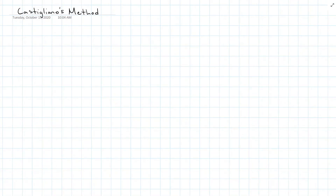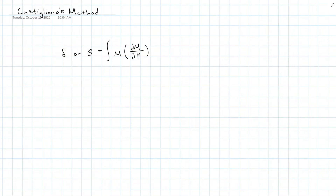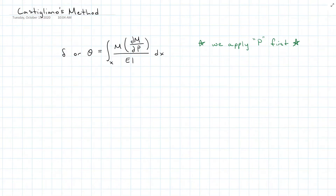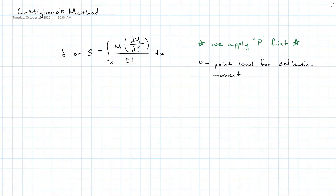Castigliano's method is very similar to virtual work, but we apply the load first. The equation is deflection or slope equal to the sum of the integrals of the moment equation times the partial derivative of the moment equation with respect to the load P, taken with respect to X, all over the material properties E and I. Just like virtual work, P is going to be a point load for deflection and a moment for slope.